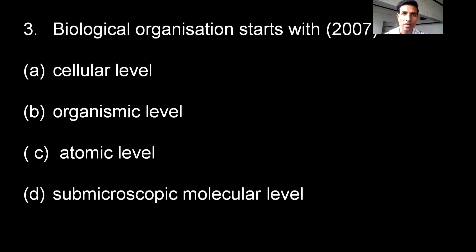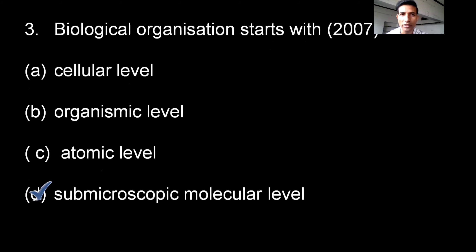Third question: Biological organization starts with which level? Options given are cellular level, organismic level, atomic level, or sub-microscopic molecular level. The correct option is D — sub-microscopic molecular level.